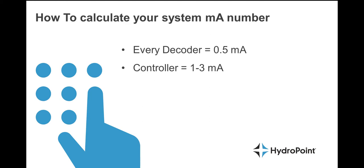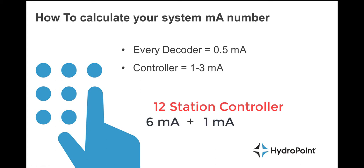To calculate the milliamp draw for your system, take the number of decoders you are running and divide it in half — every decoder shows about 0.5 milliamps on the 2-Wire path. Then add 1 milliamp for the controller. So with a 12-station controller running 12 decoders, you add 6 milliamps for the decoders and 1 milliamp for the controller, for a total milliamp draw of 7 milliamps. That total means every wire connection is tight and the 2-Wire path is pristine all the way through the system.